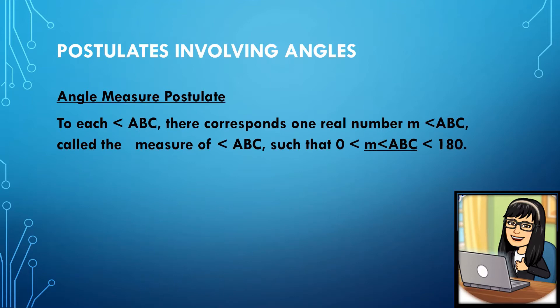Moving on to postulates involving angles, we have the Angle Measure Postulate. It states that to each angle ABC there corresponds one real number called the measure of angle ABC, such that the measure of angle ABC is between 0 to 180. In geometry, the measure of the angles is only between 0 to 180.